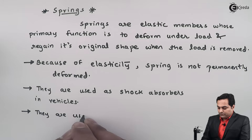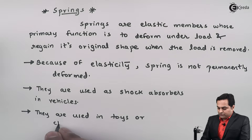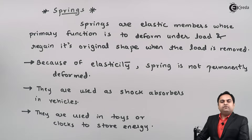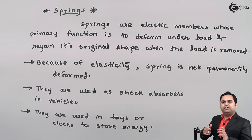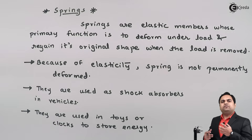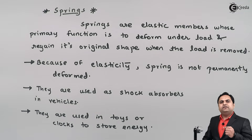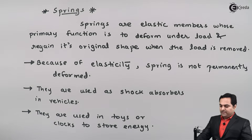Springs are also used in toys or clocks to store energy. In toys, we rotate the spring with the help of a key, and when the key rotation stops, the toy begins to play. Inside the toy, the spring stores energy as we rotate the key, and once we remove the key, the spring releases the energy in the opposite direction and the toy begins to work.